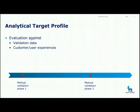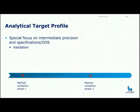Data is typically obtained from the validation of the method that we do before phase one, and the final validation we do before phase three, which is the full ICH type of validation. In addition to this, we have feedback and input from customers and users. We have a special focus on intermediate precision, because that impacts the specifications and the number of out-of-specification results we get.